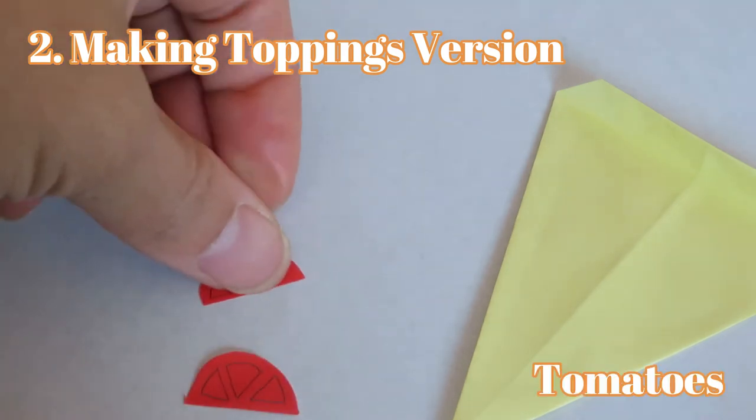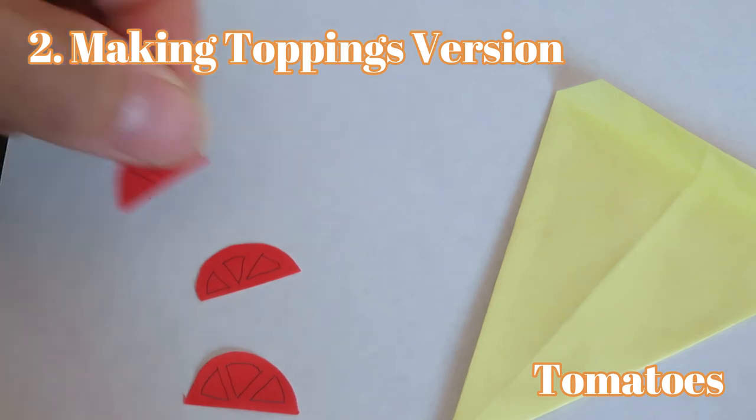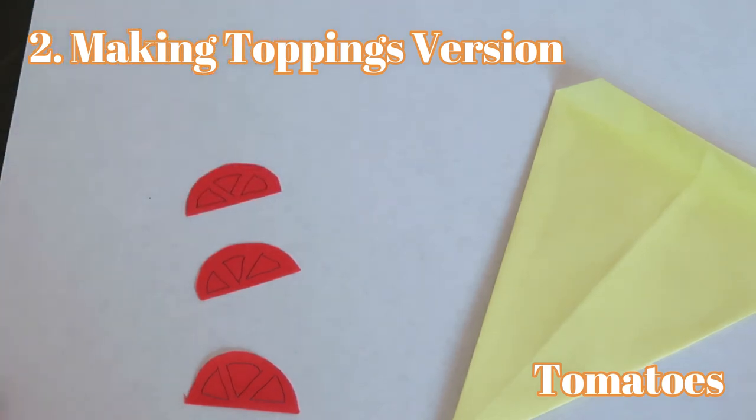Tomatoes: cut the paper into circle in half, then draw curved triangles inside like this.